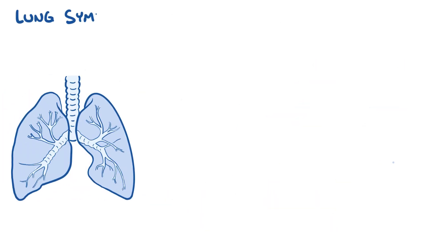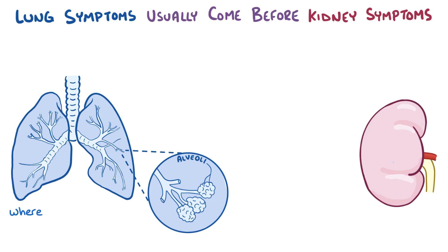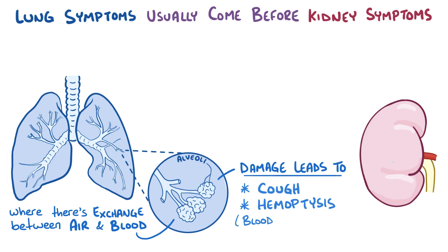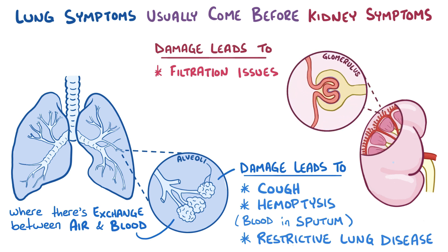In Goodpasture syndrome, lung symptoms usually come before kidney symptoms. Damage to the basement membrane in the lungs can cause widespread damage to the alveoli — the small air sacs where gas exchange happens — leading to a cough and hemoptysis, or blood in the sputum. This damage can also impair the ability of the lungs to exchange oxygen for carbon dioxide, leading to a pattern of restrictive lung disease. Damage to the basement membrane in the kidney affects its ability to filter properly, allowing blood into the urine (hematuria) as well as protein into the urine (proteinuria), fitting the pattern of nephritic syndrome.